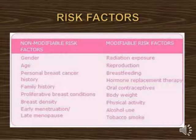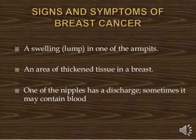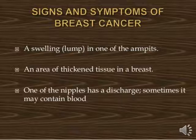Now we will see signs and symptoms related to breast cancer. The first symptom is a swelling lump in one of the armpits — swelling around the arm area in the starting phase of breast cancer. Next is an area of thickened tissue in the breast — a thickening feeling in the breast area. Another sign is nipple discharge, which sometimes may contain blood.